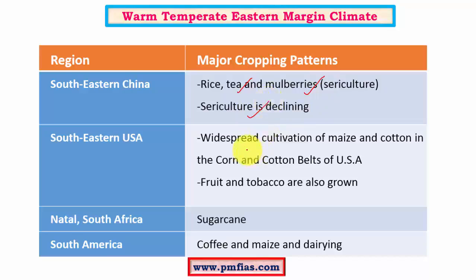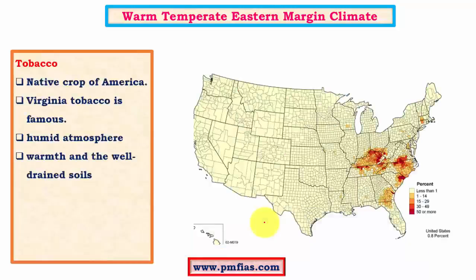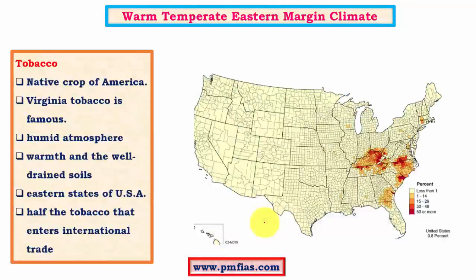In southeastern USA there is widespread cultivation of corn, wheat, and cash crops like cotton and tobacco. This region is very famous for cotton and tobacco. We have sugarcane in the Natal and South African region, and in South America there is coffee, maize, and dairying. Dairying occurs mostly in the grassland regions. Tobacco is a very important crop of eastern USA, occurring in regions with warm climate and good rainfall.